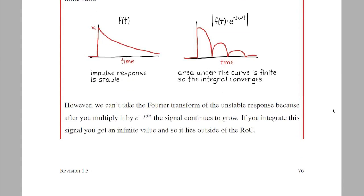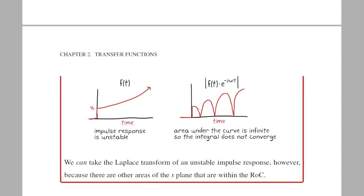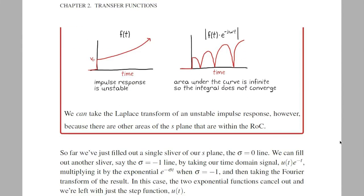However, if we multiply the unstable response by e to the minus j omega t, the signal will continue to grow, and the area under the absolute value of the curve now has infinite value. This is not within the region of convergence, and it's the reason why you can't perform the Fourier transform on an unstable system. However, this is not a problem for Laplace because there are other regions in the s-plane that are within the region of convergence.